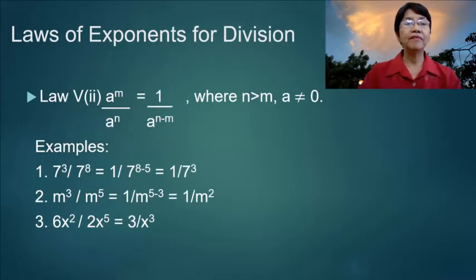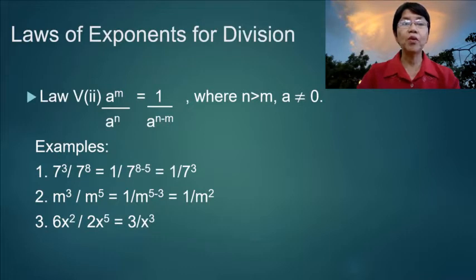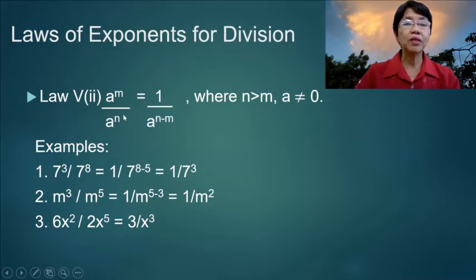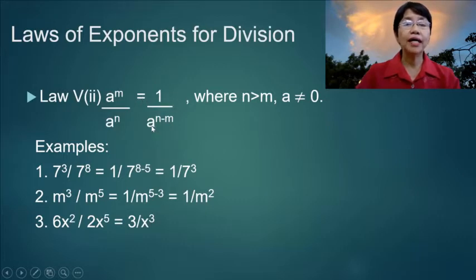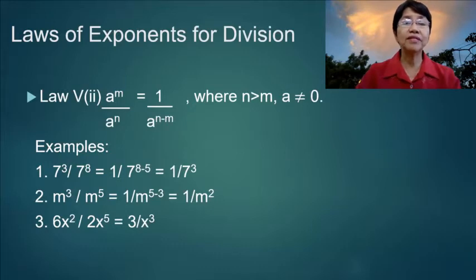Law 5 part 2: a to the m over a to the n is equal to 1 over a to the n minus m, where n is greater than m. That means that if the power of the divisor or denominator, n, is greater than the power of the numerator, m, your answer will be 1 over a to the n minus m — you subtract the power of the numerator from the power of the denominator.